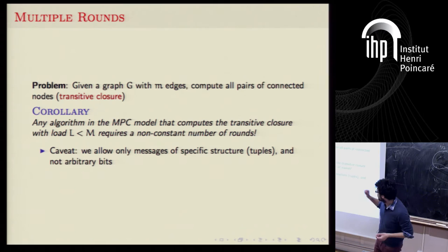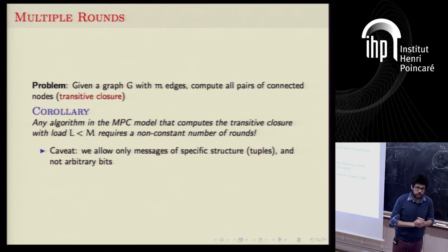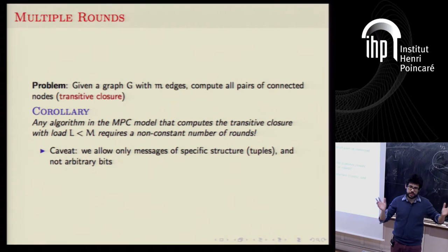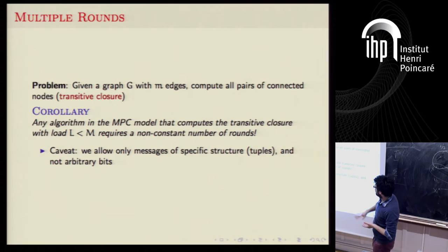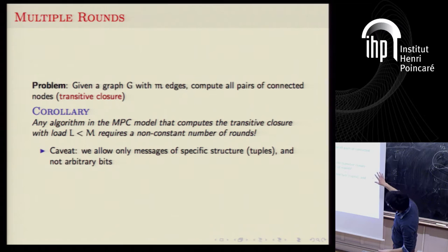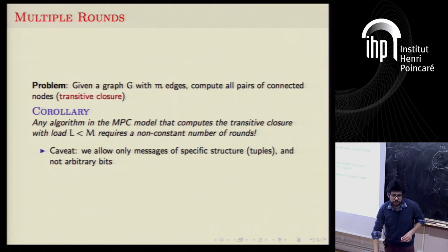A caveat: the previous one-round results hold without any assumption about how you send the data — encoding, randomization, anything. But for these multi-round results, we require messages to be of a specific type: we don't allow arbitrary bit operations, only joining tuples or sending around tuples. This is a restriction, but a very natural one for databases, since this is basically how any database engine works.